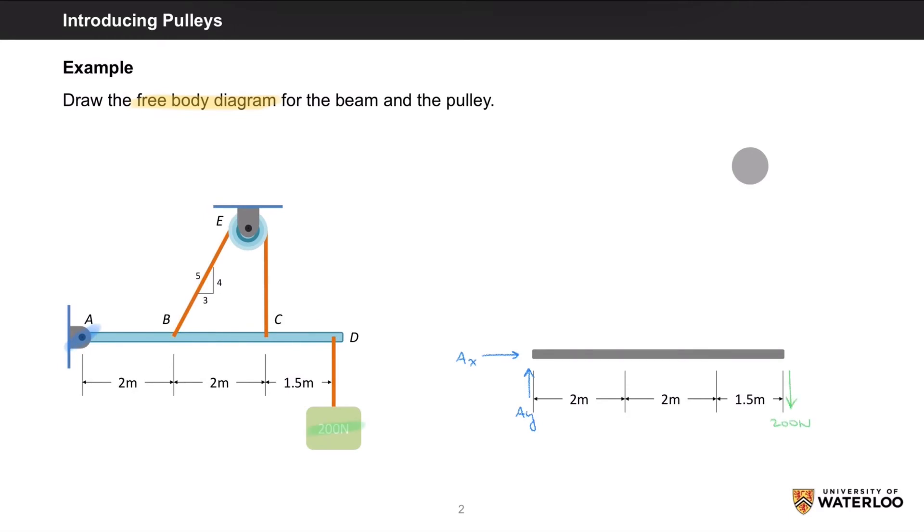Now let's add the tension forces from the rope strung over the pulley. These will follow the direction of both ends of the rope, and we know that the tension in the rope is the same along the entire length. And this also applies to a rope on any angle, so we can simply write T, or whatever variable you'd prefer to use.